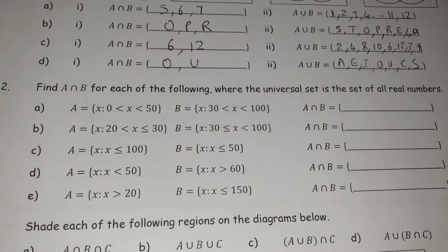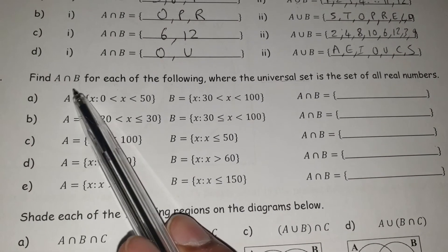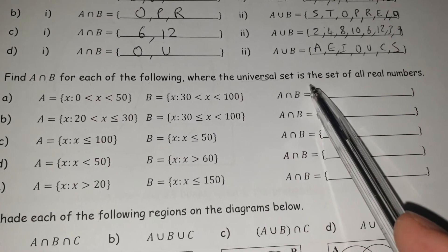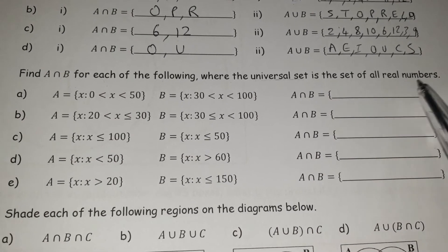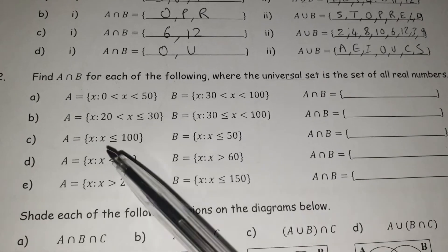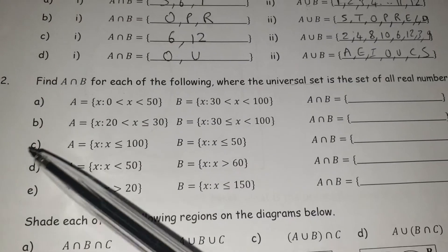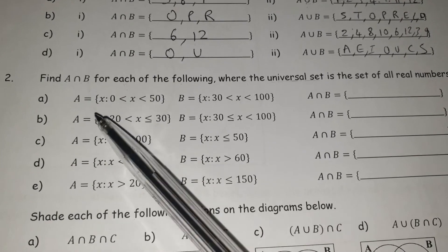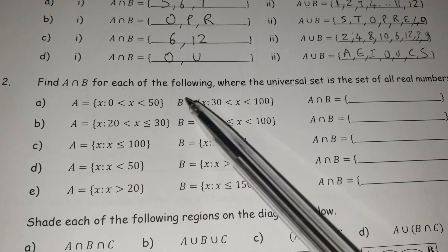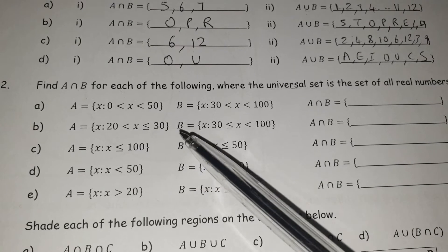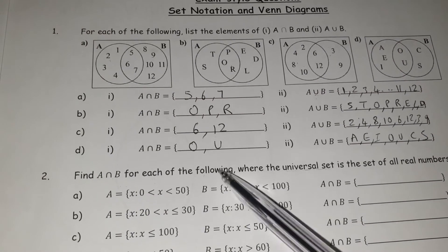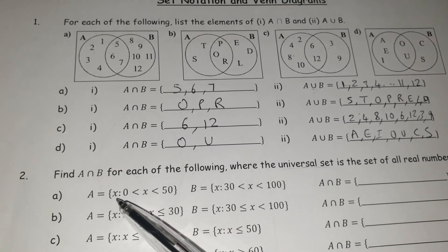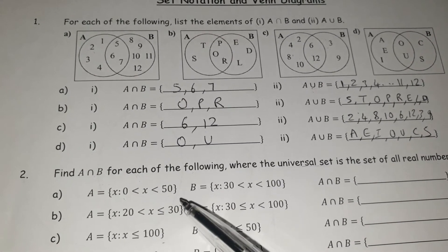Moving on to question number 2. It says find A intersection B for each of the following, where the universal set is the set of all real numbers. Let's break down the question — find A intersection B, so it's going to be A and B and the intersection between them. These set notations refer to something that can be drawn as a Venn diagram, so I'm going to do the first one for you so it actually makes some sense.